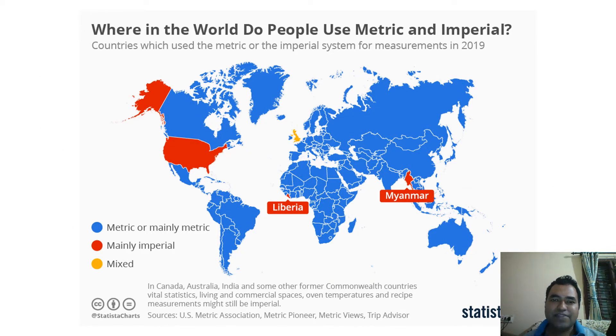This is a representation of the geographical variation. Here you can see which countries use metric units and imperial units. You can see 90% of the world uses metric units. Only USA, Liberia and Myanmar use the imperial system of units.